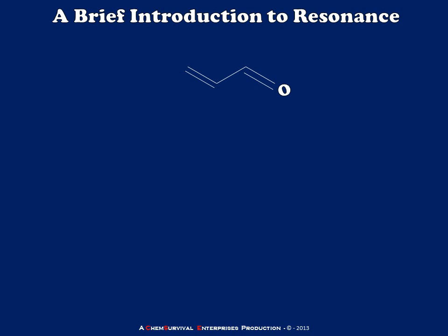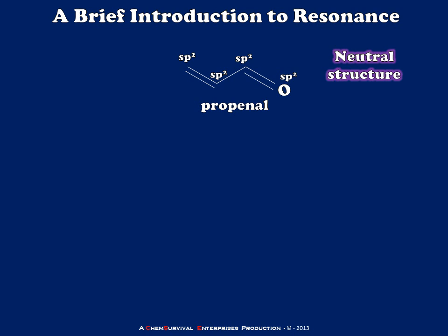Now let's try a simple organic molecule — propenal. It's drawn here as a neutral structure where all atoms have zero formal charge and everything has an octet. It looks like a very stable structure, but this is not actually how propenal looks. Notice that all atoms are sp2 hybridized, meaning there's a larger pi system through which electrons can move and shift. To understand how propenal will behave chemically, we need to look at each resonance contributor and mentally construct a resonance hybrid.